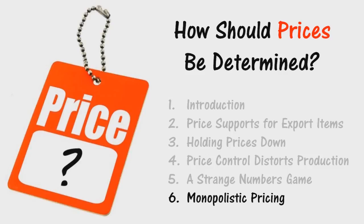The monopolist must consider the effect of his pricing policies in gaining the goodwill or arousing the resentment of the consumer. More importantly, he must consider the effect in either encouraging or discouraging the entrance of competitors into the field. He may actually decide that his wisest policy in the long run would be to fix a price no higher than pure competition would set, and perhaps even a little lower. In any case, in the absence of competition, no one knows what the competitive price would be, and therefore no one knows exactly how much higher an existing monopoly price is than a competitive price would be — or whether it is higher at all.